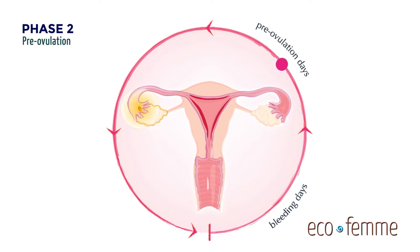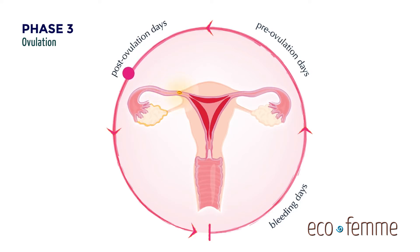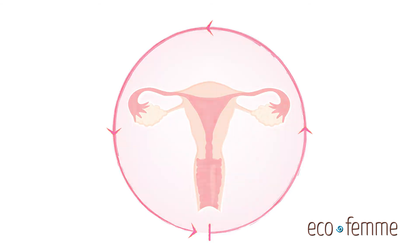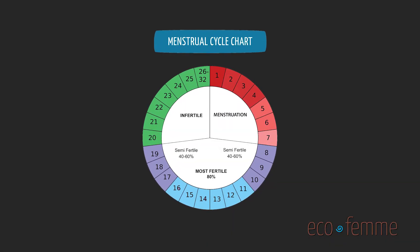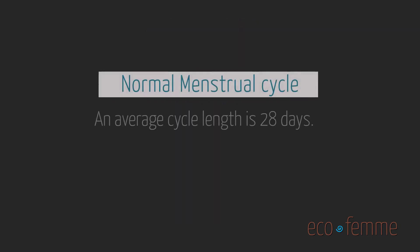The next phase is ovulation, when a matured egg is released from an ovary and travels to the fallopian tube to get fertilized. The last phase is pre-menstruation, when an unfertilized egg fades away and the nutrient-rich uterine lining begins to detach from the uterine wall.